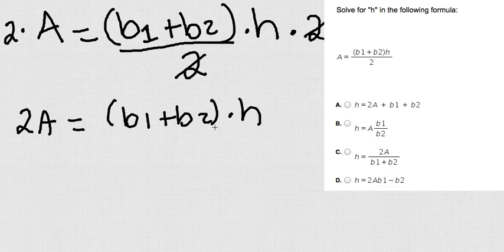Now I'm almost done. As you can see here, I have 2A equals, and then parenthesis, B1 plus B2 times H. Remember, I want H by itself. Well, H is multiplying B1 plus B2. Since it is inside the parenthesis,